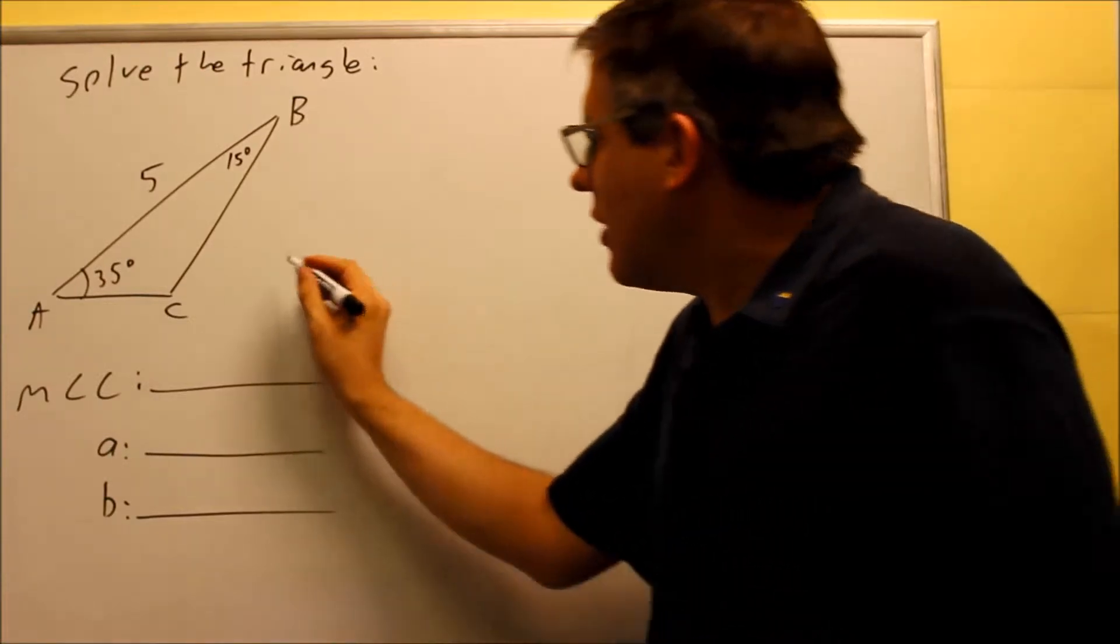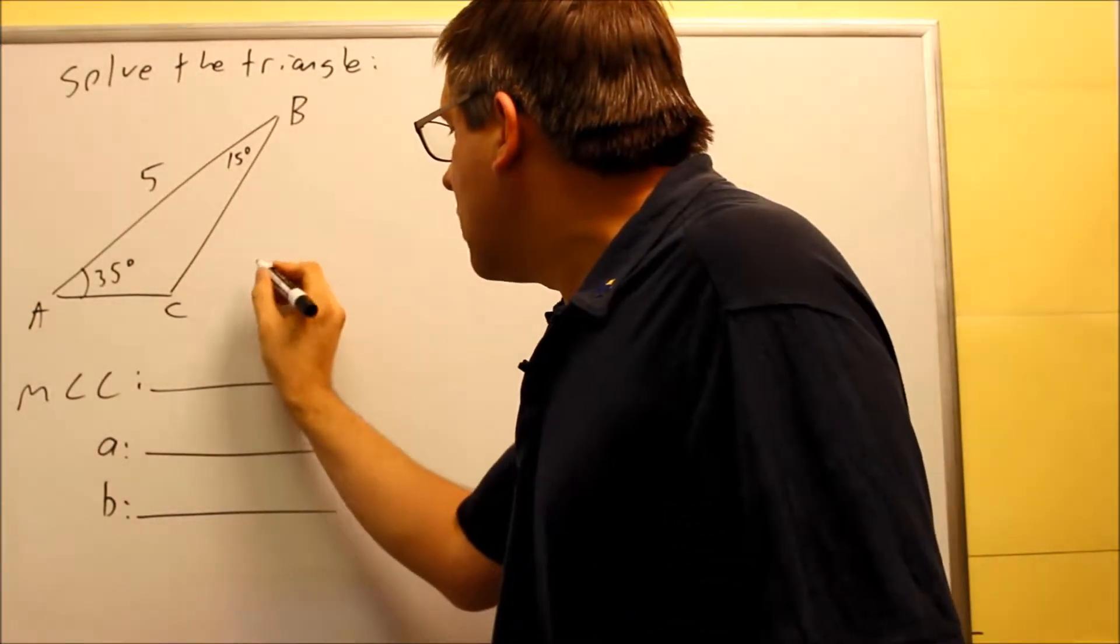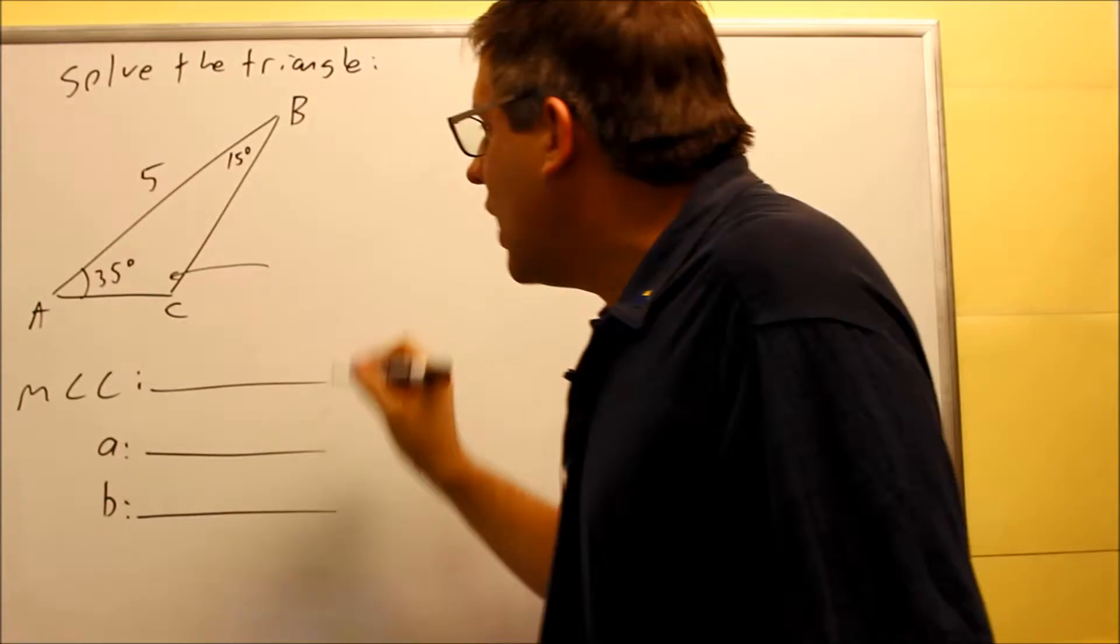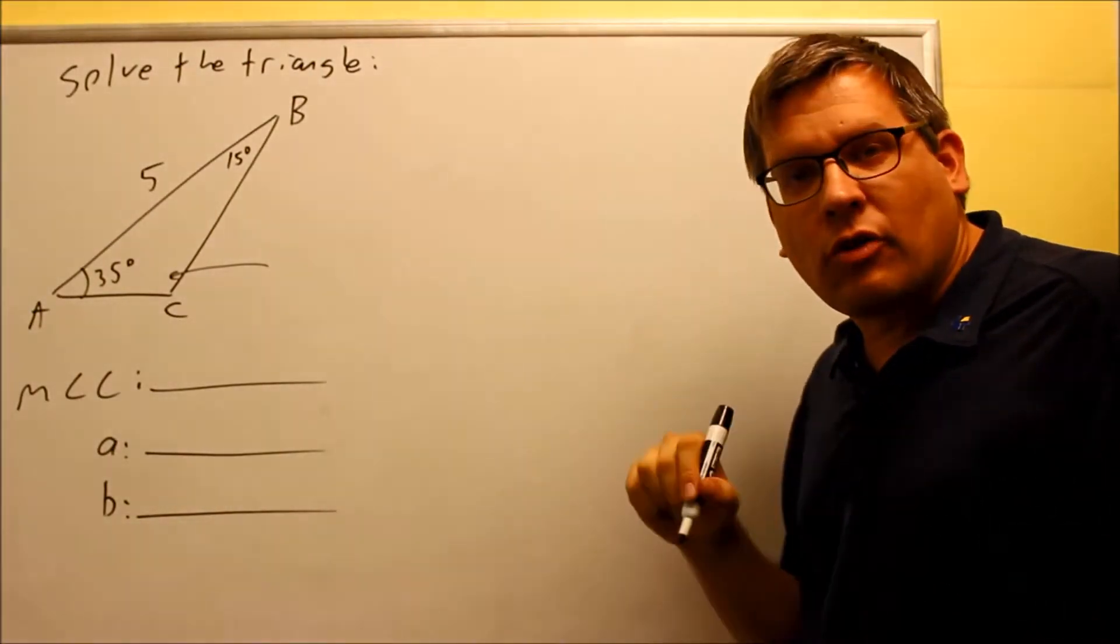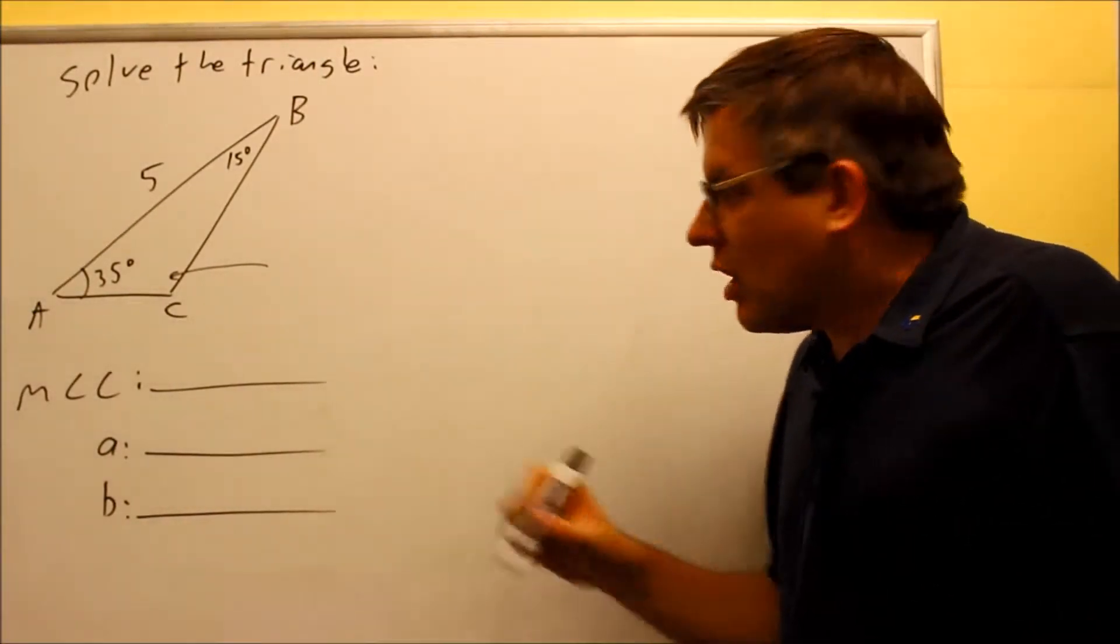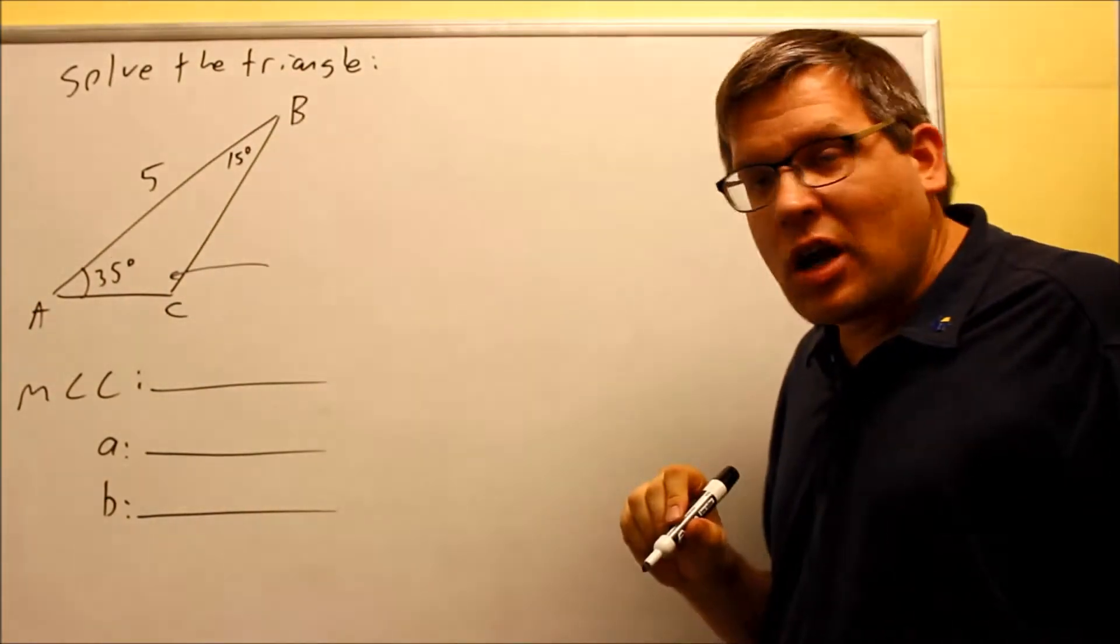First thing you want to do is find the missing angle that's here. So we're going to find angle C. We have to use that because we need to know our given ratio when we do the law of sines. We have to have an angle opposite a given side.